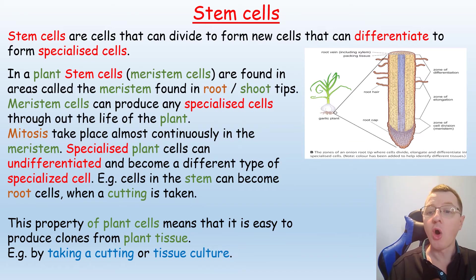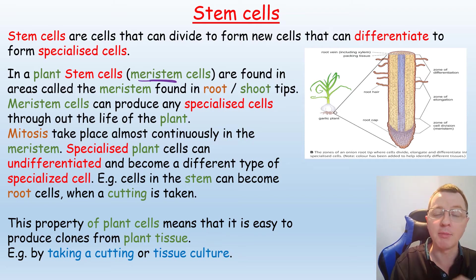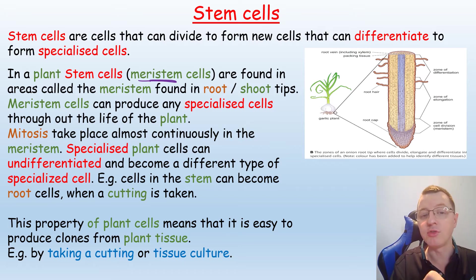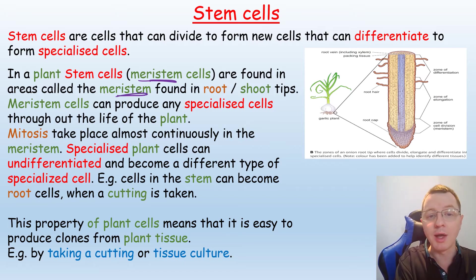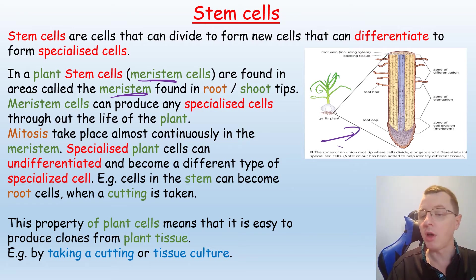Plants also have stem cells. The stem cells in a plant are often known as meristem cells because they're found in areas of the roots and shoots known as the meristem. Here, for example, you can see a diagram of a root.